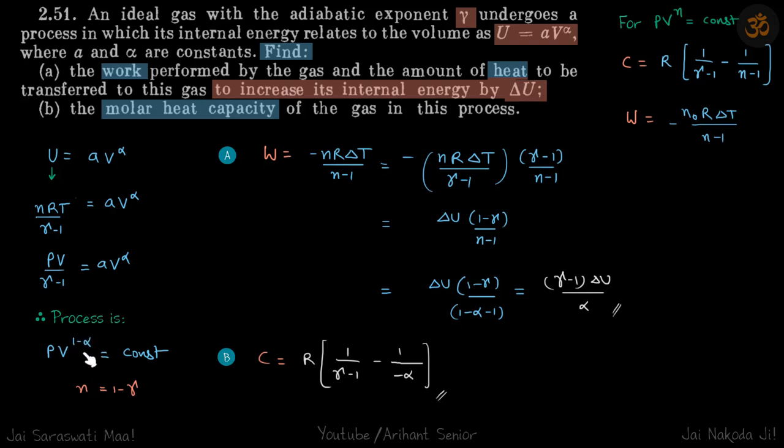So in our polytropic process, the value of N is 1 minus alpha for this polytropic process.